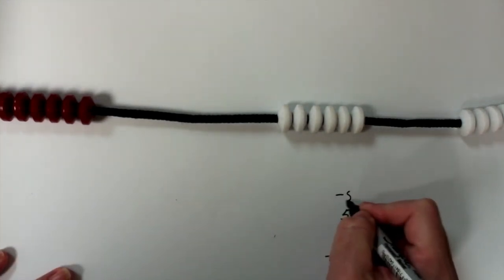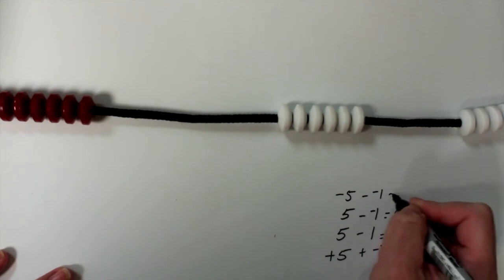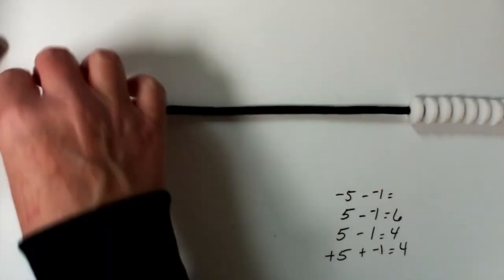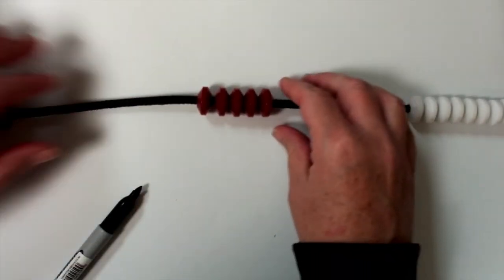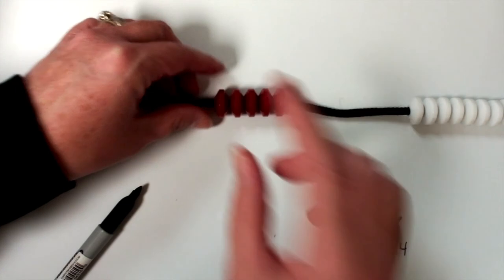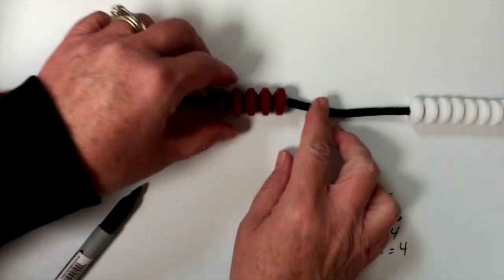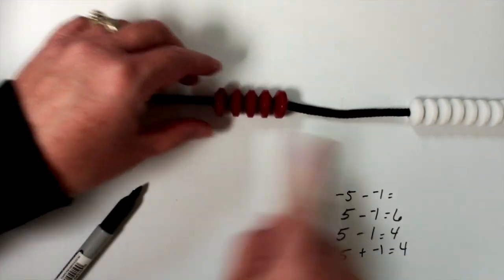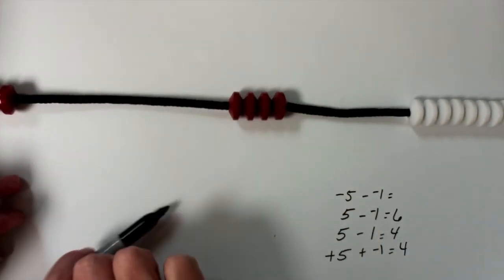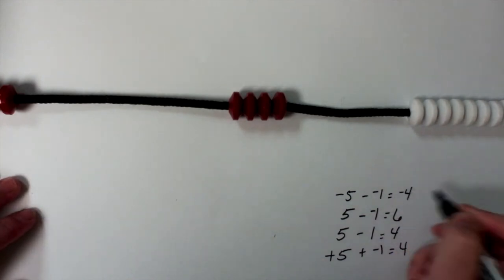So showing them how to do that each time is really important. Let's say I've got negative five and I want to take away a negative one. I've got negative five — one, two, three, four, five negatives. Now I'm going to take away a negative one — can I? I can, and my answer is negative four.